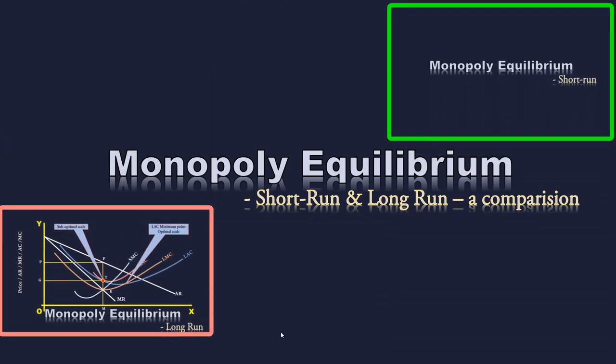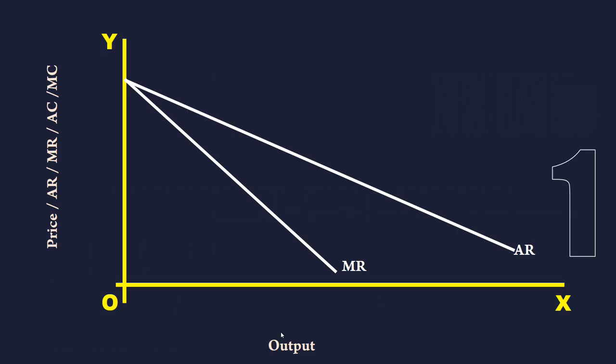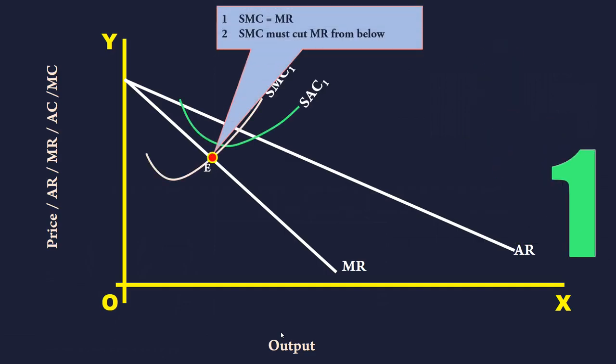We shall see one by one. In the short-run, monopoly firm is in equilibrium when the following two conditions are satisfied: 1. Short-run marginal cost is equal to marginal revenue. 2. Short-run marginal cost curve must cut the marginal revenue curve from below.